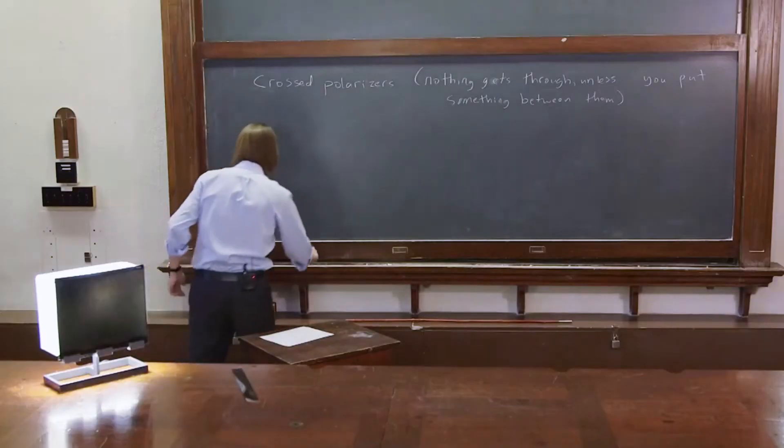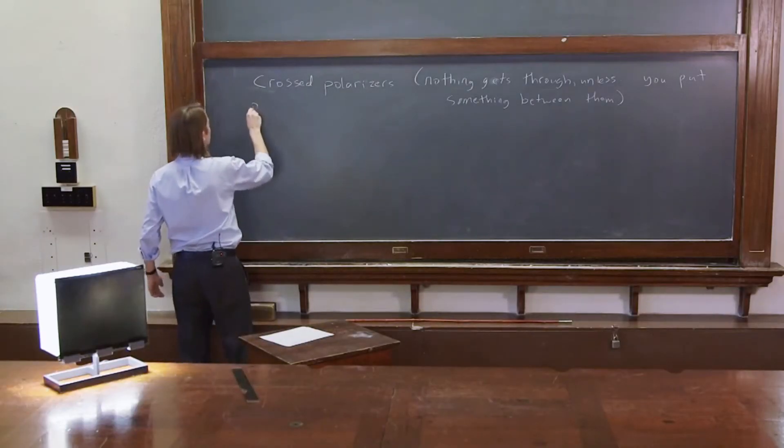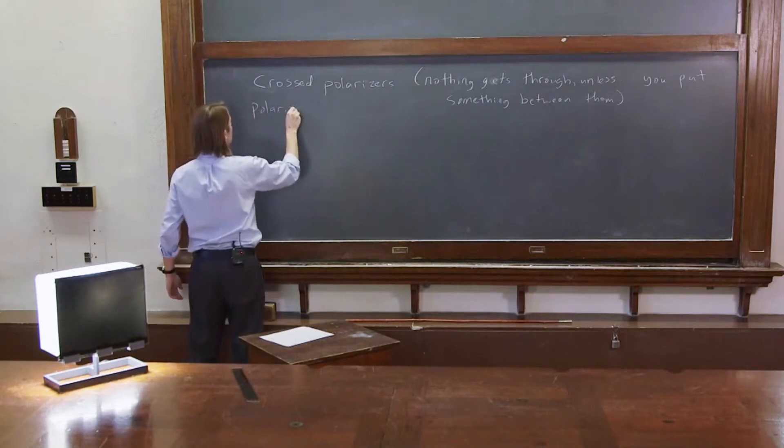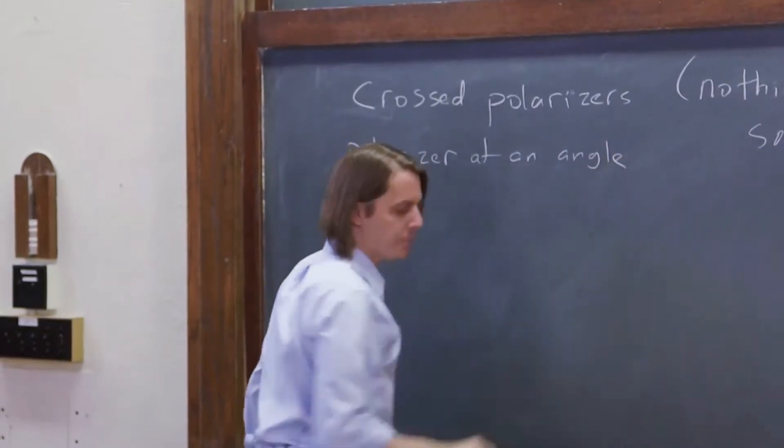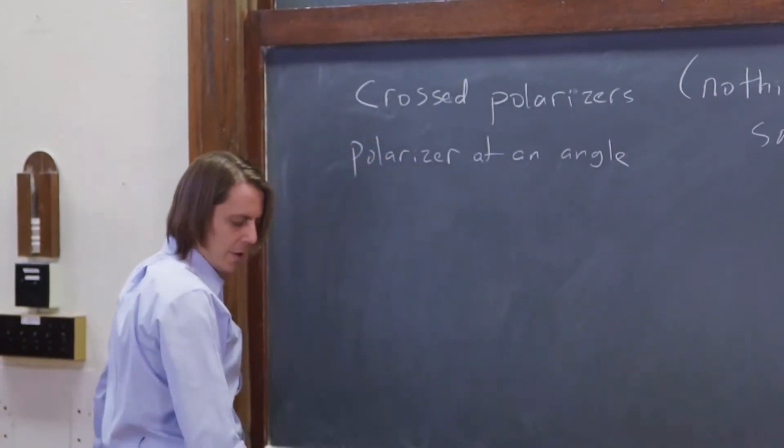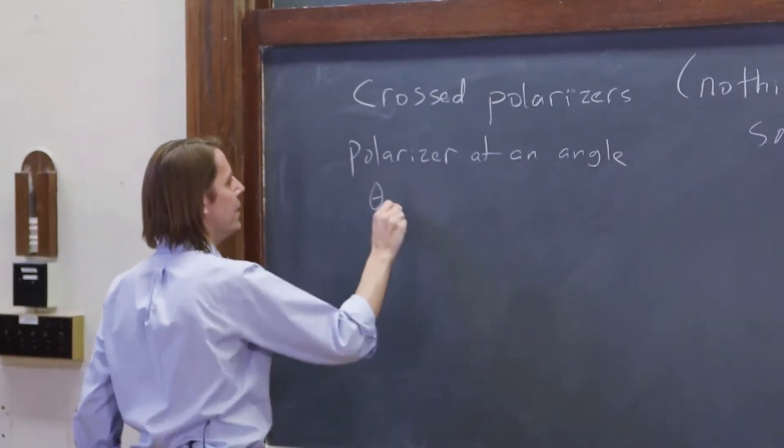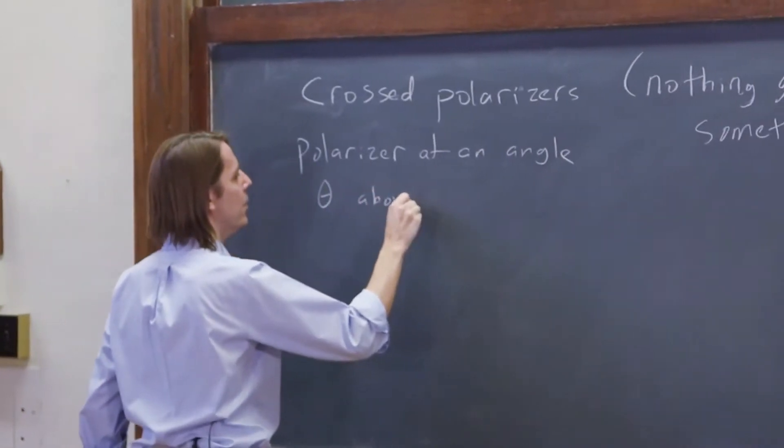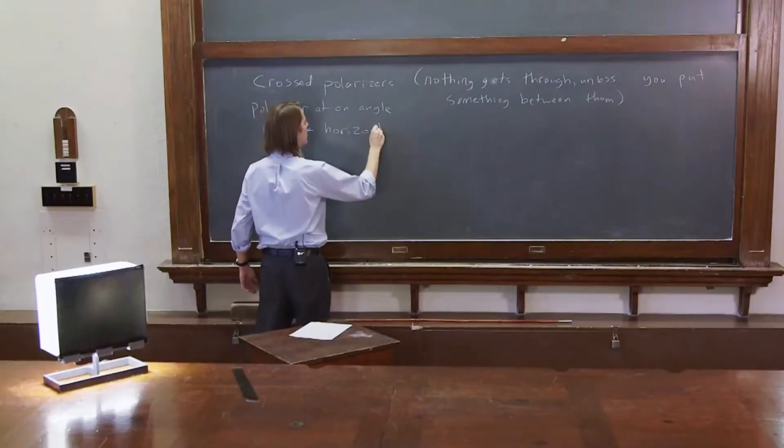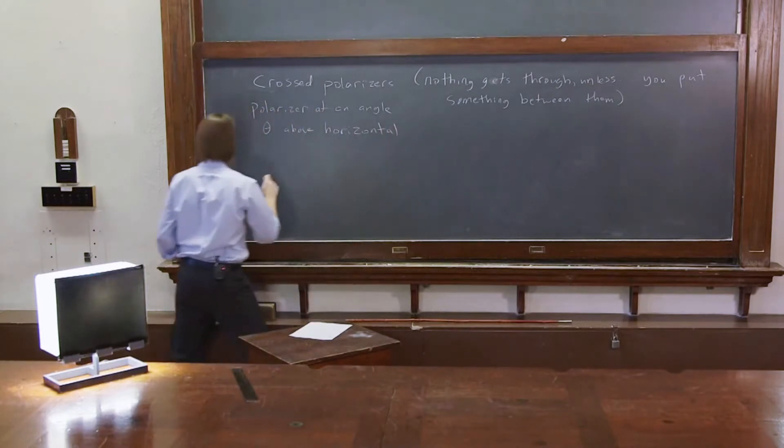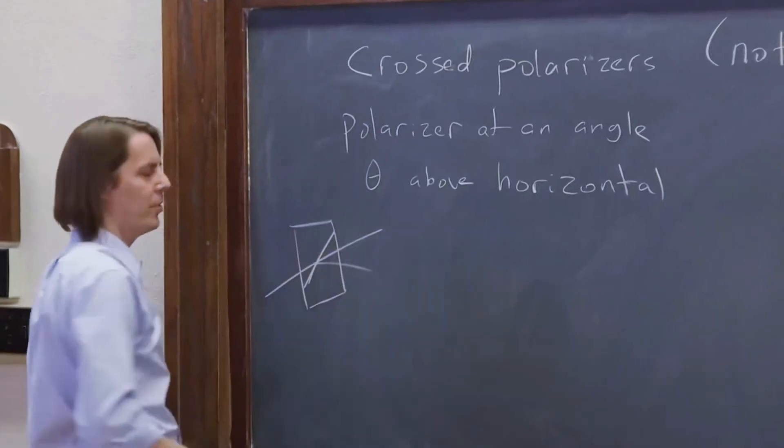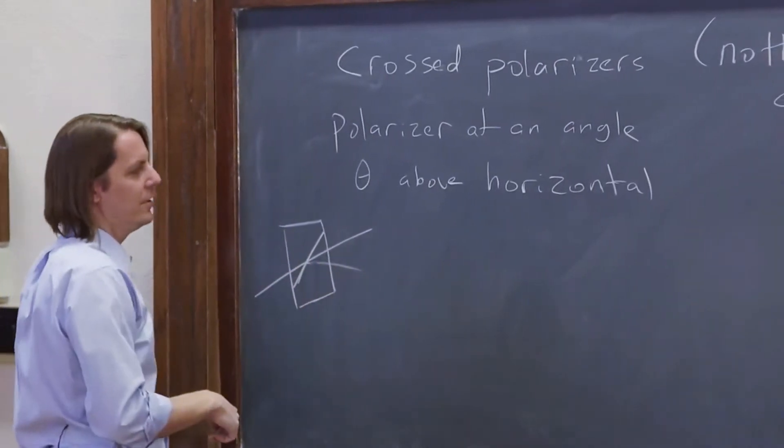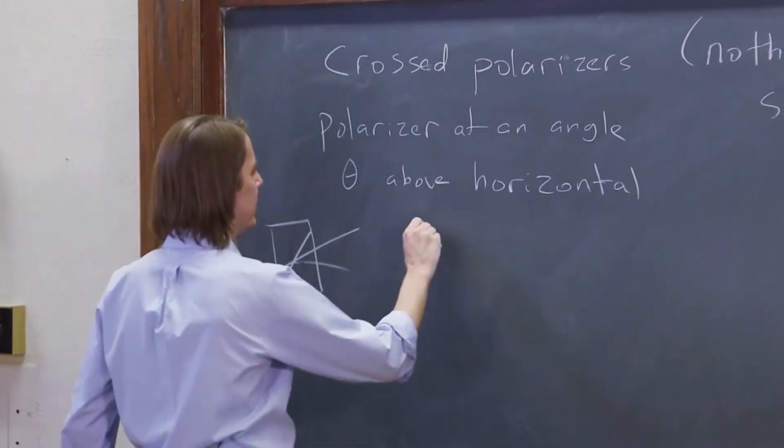Let's look at a polarizer at an angle, theta above the horizontal. And by that I mean, if this is the horizontal, we have the polarizer like this. And it's transmission axis, of course we're always talking about its transmission axis. Its transmission axis above the horizontal is an angle theta. Then its matrix looks like this.